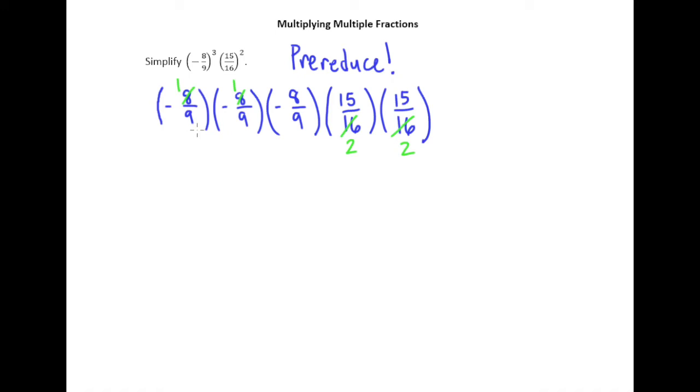Let's look at these 9s and 15s. Well, both 9 and 15 share a common factor of 3. So I can take 9 divided by 3 is 3. 15 divided by 3 is 5. 9 divided by 3 is 3. 15 divided by 3 is 5.